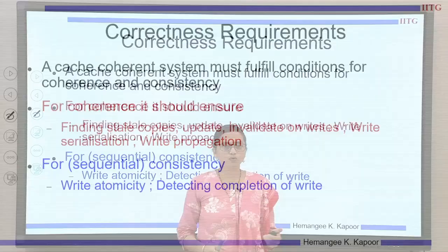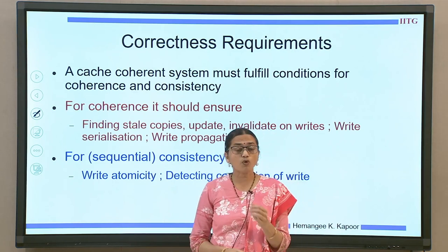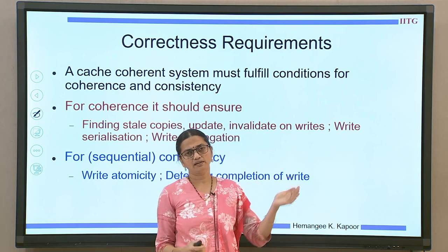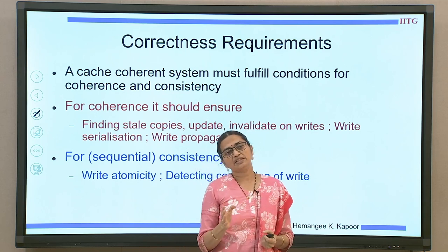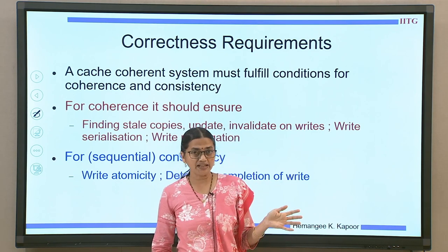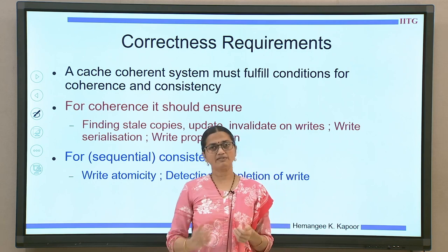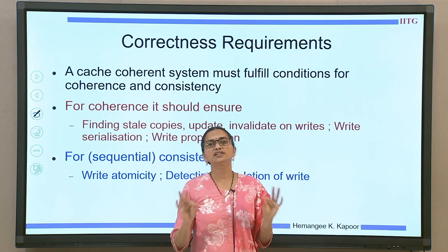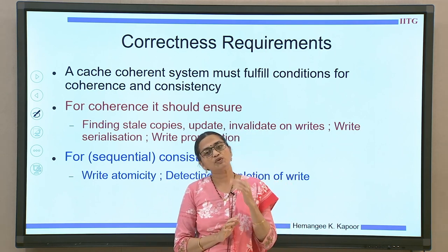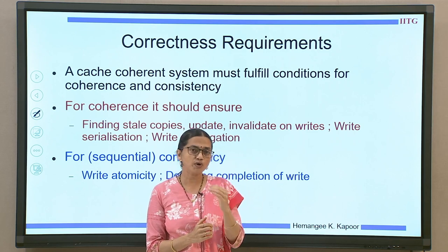Coming back to our goal of this lecture: correctness requirements. In a cache coherent system, to guarantee correctness we have to make sure that all conditions related to coherence and consistency are maintained. For coherence, when a write is done to a shared item, everybody else should be able to see it and nobody should get stale data. If there are other copies in the system, they either get invalidated or they get updated. All stale copies need to be found and either updated or invalidated. While doing this, we need to guarantee write serialization as well as write propagation.